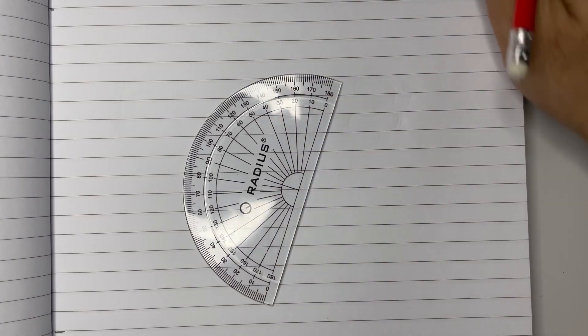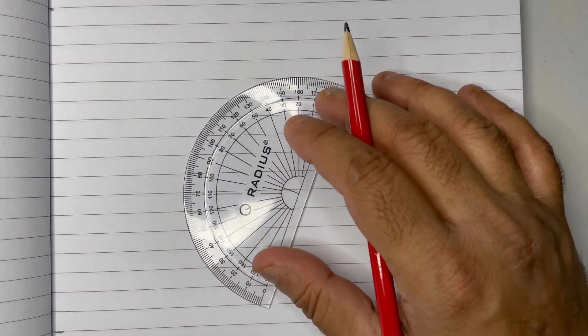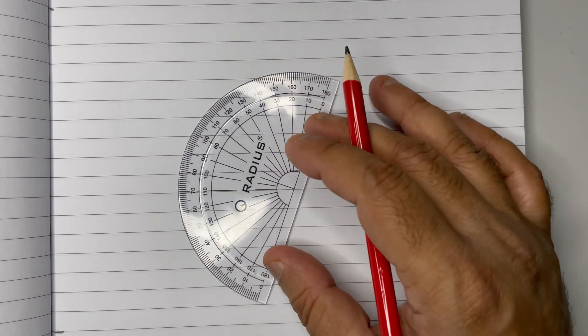Hello everyone, in this video we'll be learning how to draw the mammary glands. This is a common question for CBSC class biology. What we need is just a protractor. Keep the protractor little slanted like this.